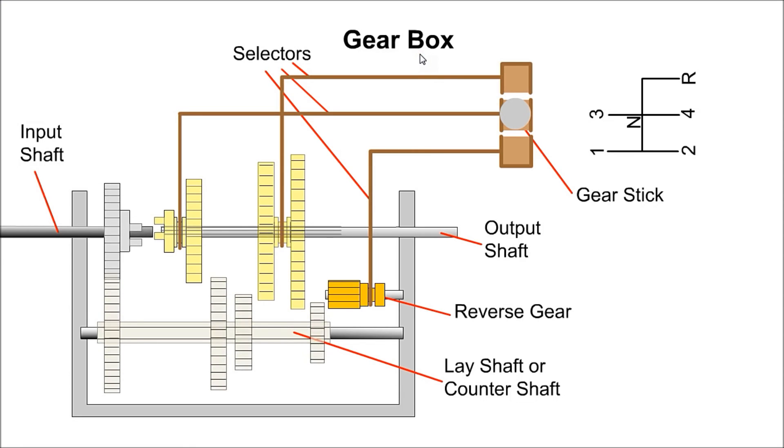A gearbox is used to vary the shaft torque depending on driving conditions: high torque for accelerating, low torque at cruising speeds. Here we show a basic four-speed and reverse gearbox. It consists of a number of gear wheels which can be intermeshed when required.